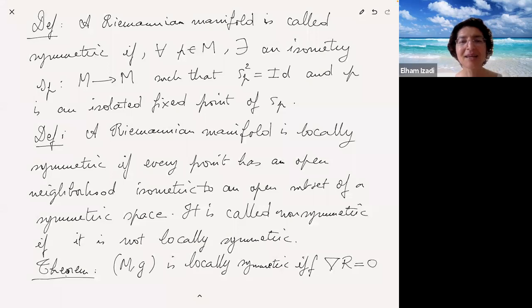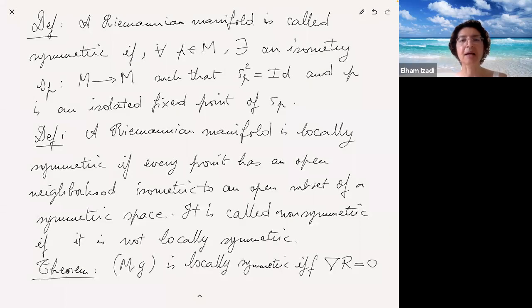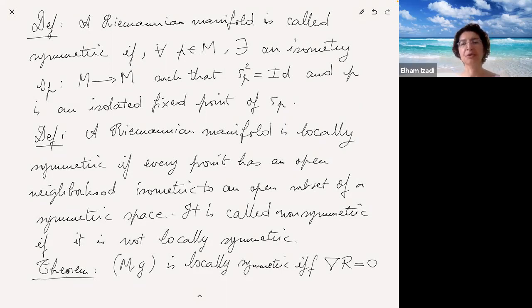Question: what are examples of symmetric Riemannian manifolds besides spheres? Symmetric spaces are basically just quotients of Lie groups: each time you have a connected Lie group and you take a closed connected Lie subgroup and take the quotient, that's a symmetric space. And they're all obtained in that way — there's a theorem about that, which I will mention next time.